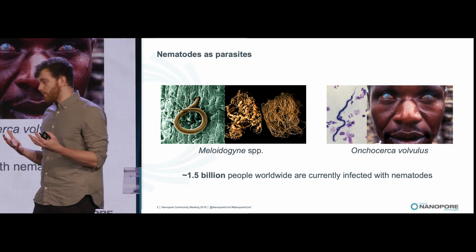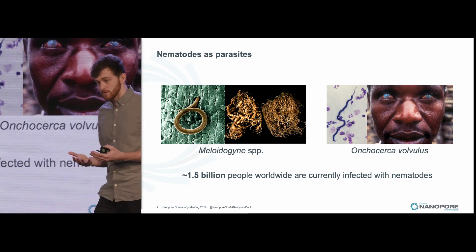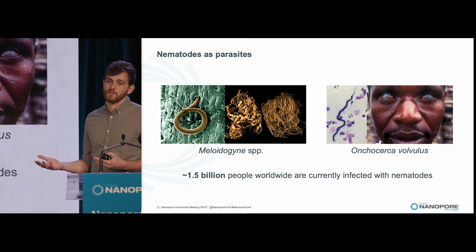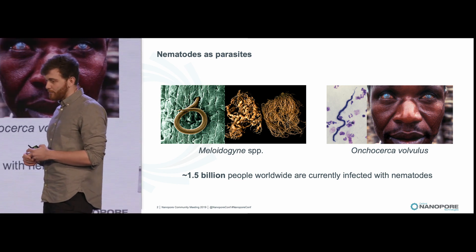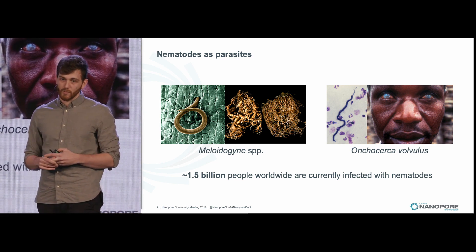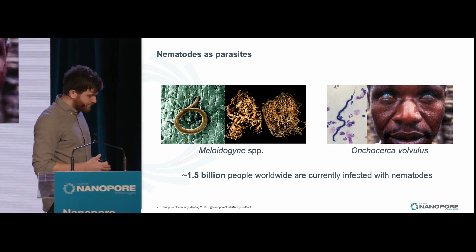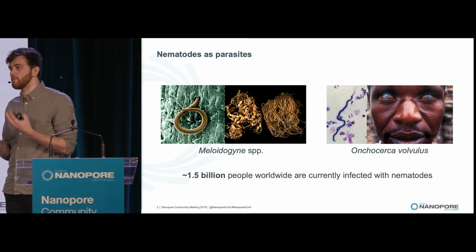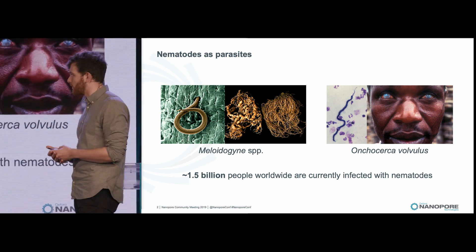But nematodes also parasitize other animals, and that includes humans. An example being Onchocerca volvulus, which is the causative agent of river blindness. It's estimated that over one and a half billion people worldwide are actively infected with nematodes. There is therefore a huge interest in understanding how nematode parasitism works, and importantly, how it evolves.